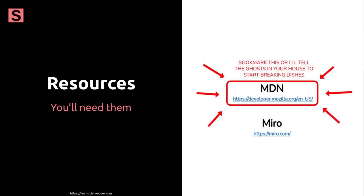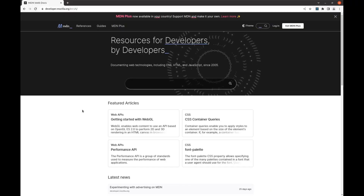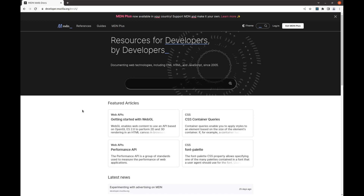That's about it for our intro. I need you to bookmark both of the sites on this slide. We'll use the first one, MDN, short for Mozilla Developer Network, all the time, and Miro we'll use less frequently. MDN contains references and guides for everything that we need to know about HTML, CSS, and JavaScript.